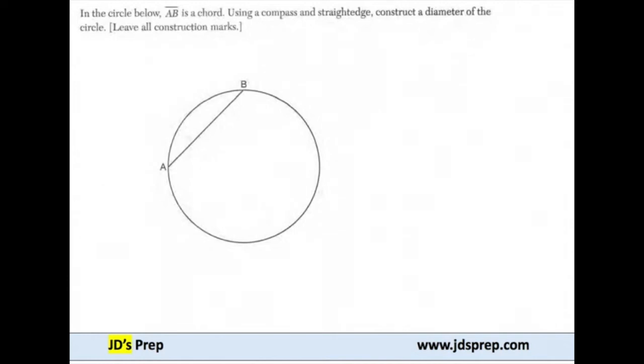Hello, welcome to JD's Prep. For this example, you have a circle below where AB is a chord. We're going to use a compass and a straightedge to construct a diameter of the circle.